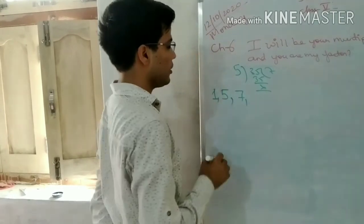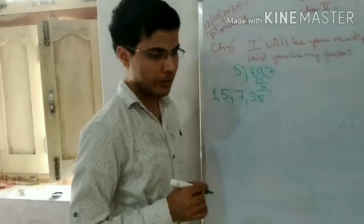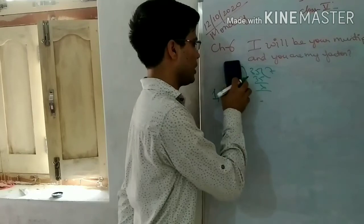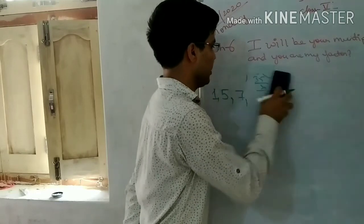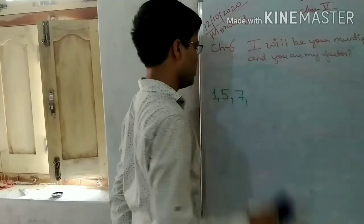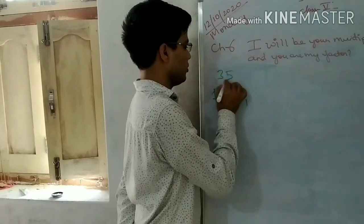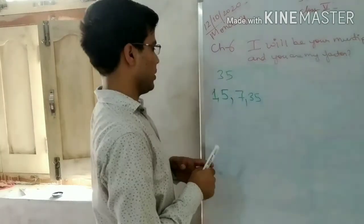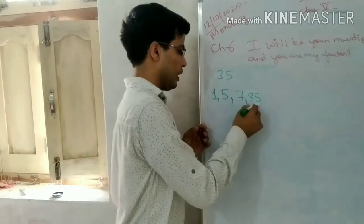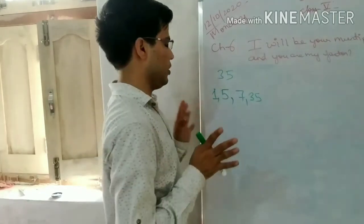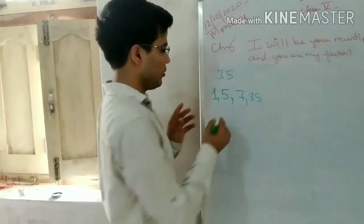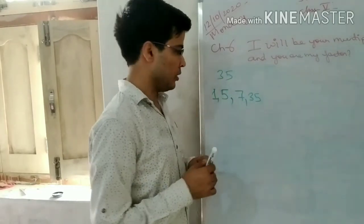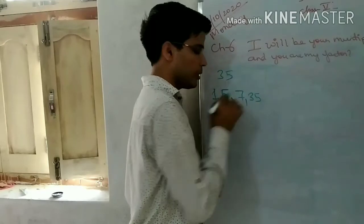Then it will come directly in the table of 35. So we will get only these factors: 1, 5, and 7 are the factors of 35, and 35 itself. So there are 4 factors of 35. 1 and the number itself are always common in every factor. But you have to find additional factors. So 35 can be divided by these 4 numbers only.